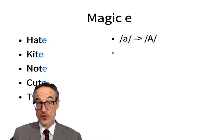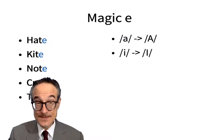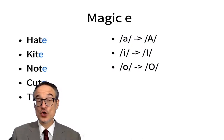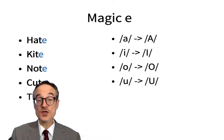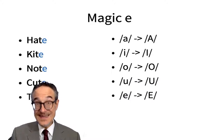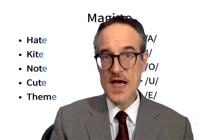The magic E changes an A sound to an A sound. It changes an I sound to an I sound, so kit becomes kite. It changes an OR sound to an O sound, so knot becomes note. And it's going to change an E sound to an E sound, which means them becomes theme.